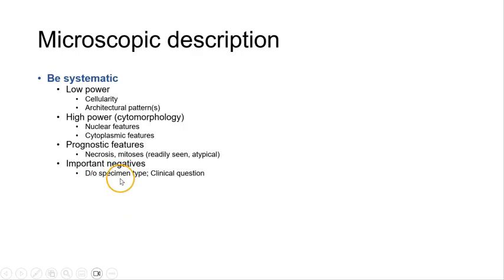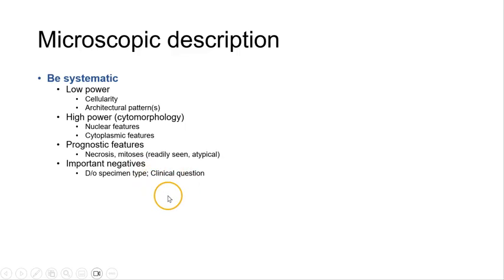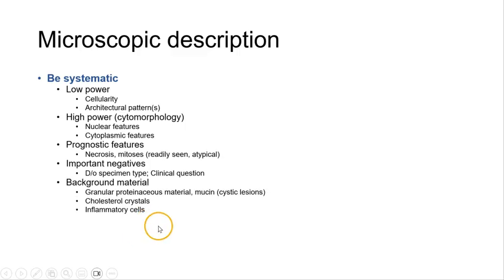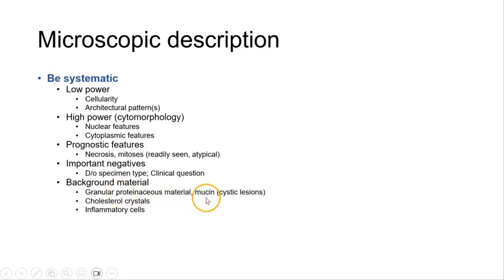Important negatives really depends on the specimen type, and this is an active attempt at answering the specific clinical question at hand. It's also important to include relevant background material, for example, granular proteinaceous material or mucin in cystic lesions.